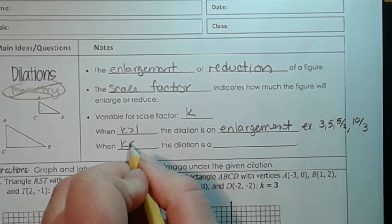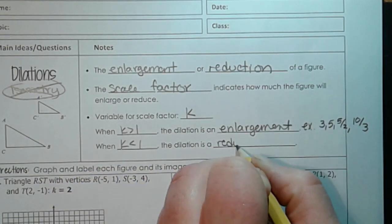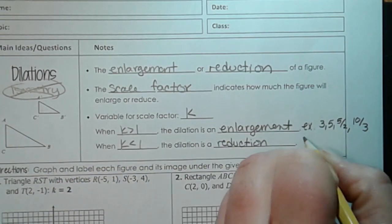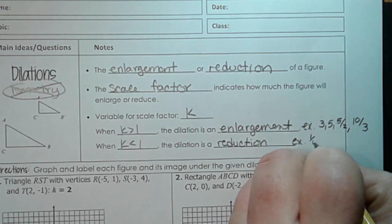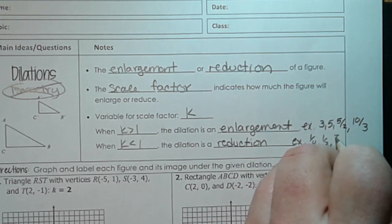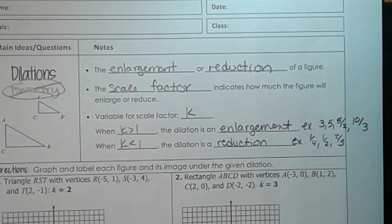Now if k is less than 1, it's going to be a reduction. So some examples of that would be 1 fourth, 1 half, 2 thirds, any of those numbers. Or any number that is anywhere in between 0 and 1 on the number line is going to make it a smaller shape, which makes sense.